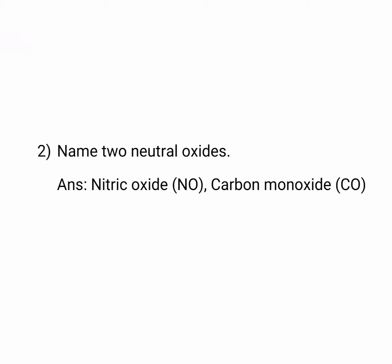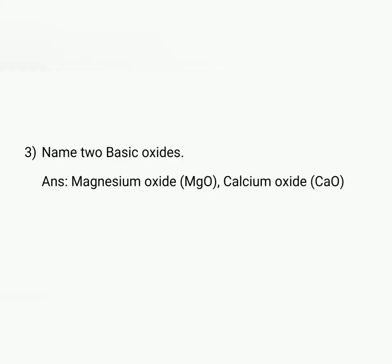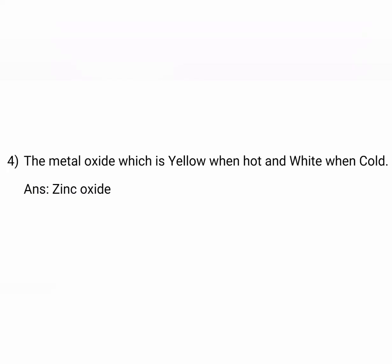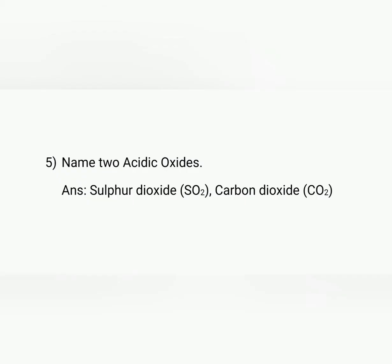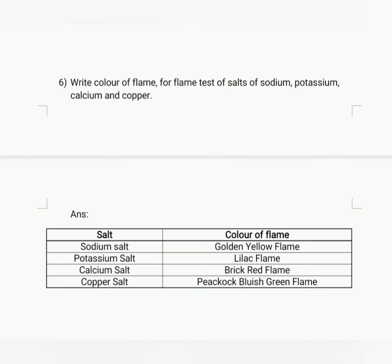Third: name two basic oxides. Generally, metal oxides are basic in nature, so magnesium oxide and calcium oxide are basic in nature. The metal oxide which is yellow when hot and white when cold — answer: zinc oxide. Name two acidic oxides. Generally, non-metal oxides are acidic in nature, so the answer is sulfur dioxide and carbon dioxide.